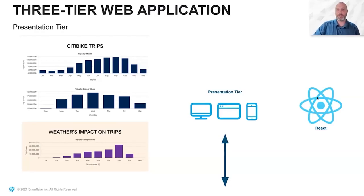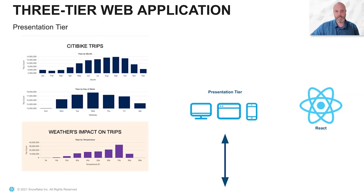I mentioned earlier there's a presentation tier built in React — you could use Vue or any other language you want to. This is just HTML with some JavaScript to render it. We use a charting library called chart.js to visualize this. But this layer is really about separating concerns from different parts of engineering — this developer is able to focus entirely on the user experience. The separation of concerns is really where these three-tier web applications came from. Customers ask me how to build an app on Snowflake, and we're showing that your application looks almost identical. You're probably already building front-end web apps in React today, and you can still continue to do that while using Snowflake for your back-end.